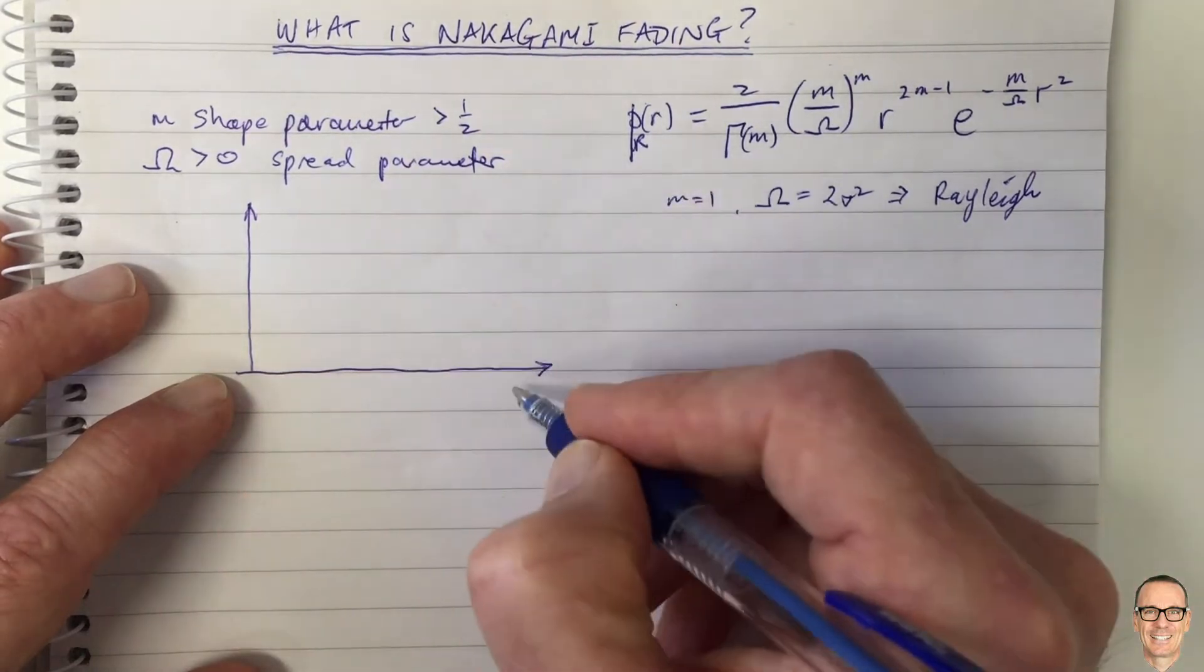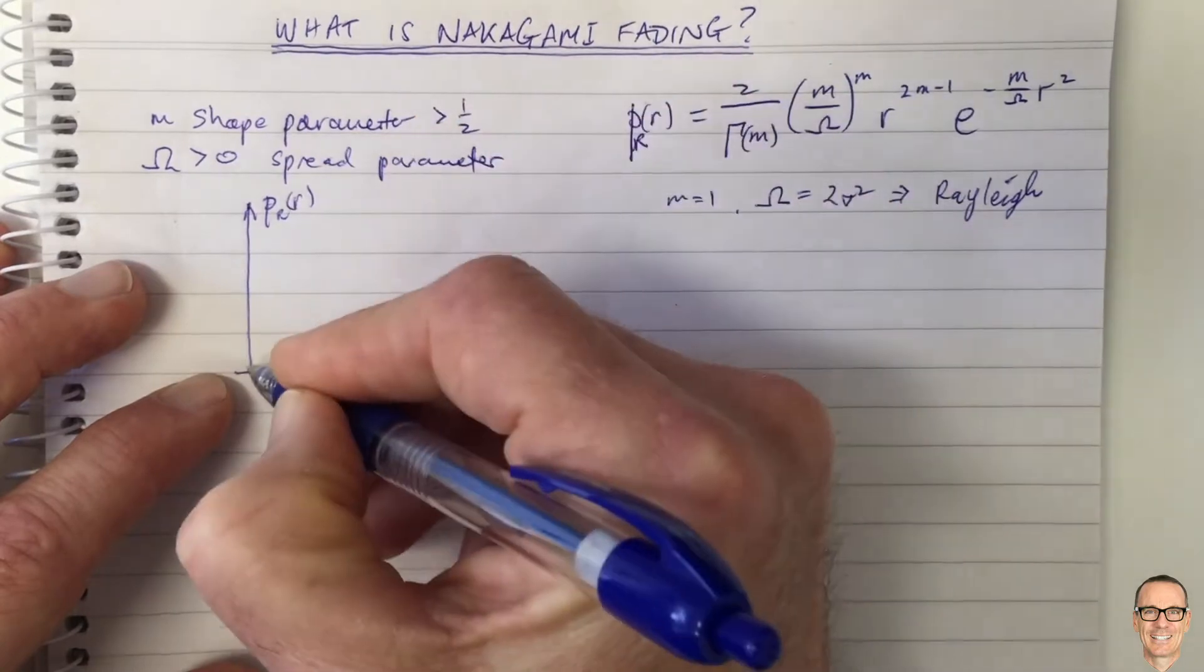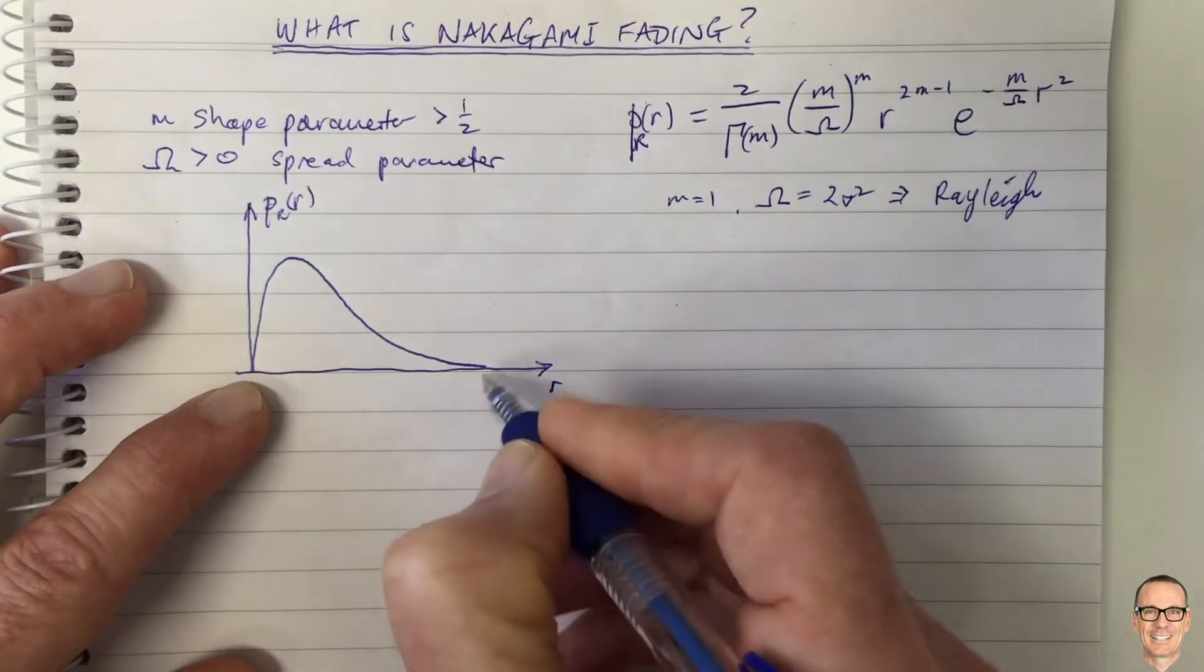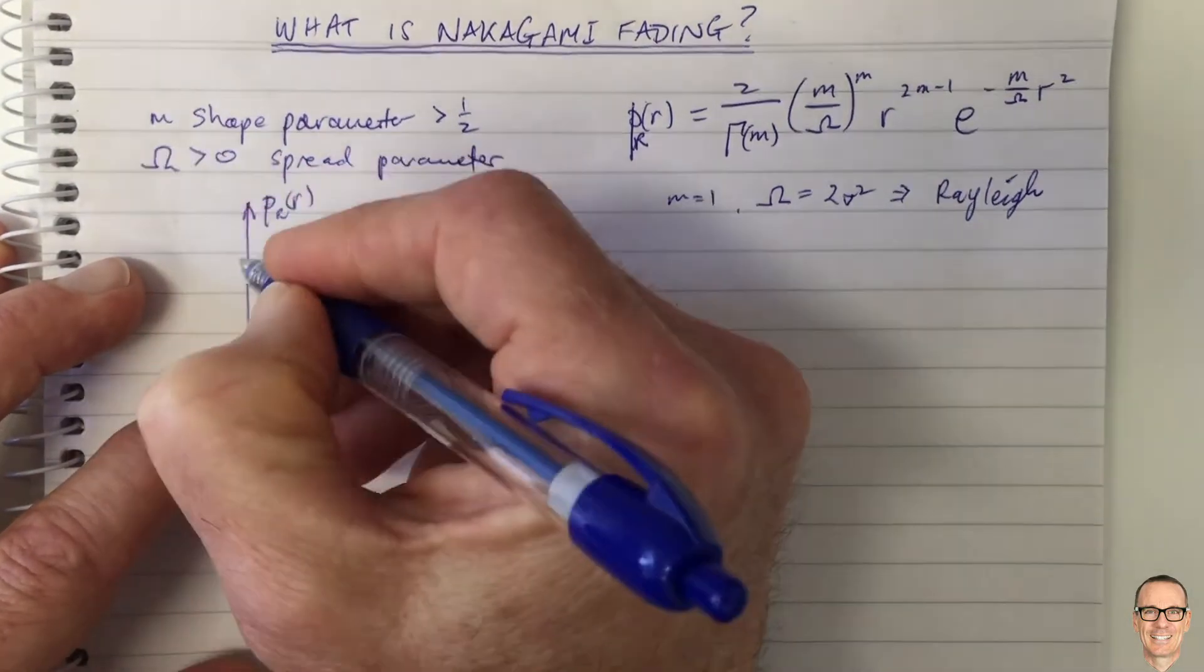So what does Rayleigh fading look like? Well, if I draw the probability density function, as we know, the Rayleigh for the amplitude distribution looks like this function here. So this is for M equals 1, this is the M equals 1 case.